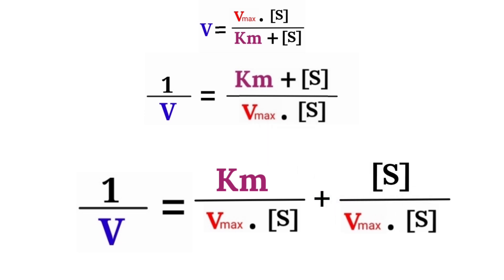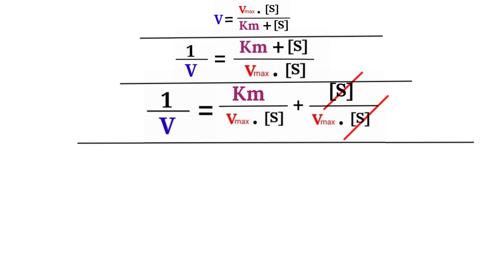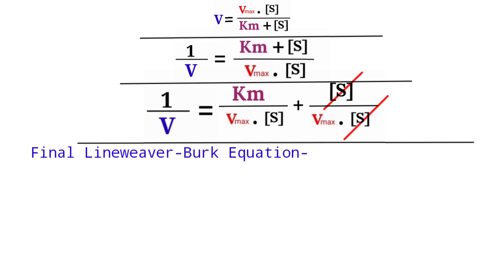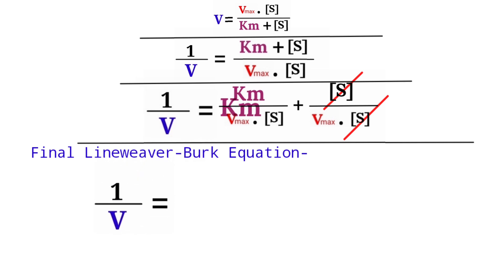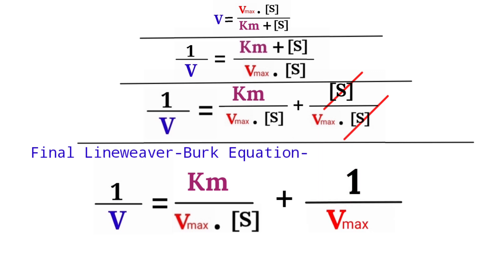After canceling the substrate concentration at the numerator and denominator in the second term, you get the final Lineweaver-Burk equation: 1/v = Km / (Vmax × [S]) + 1/Vmax.